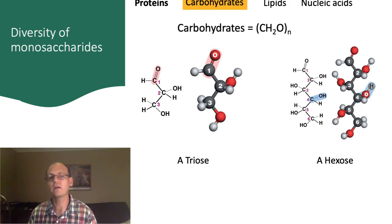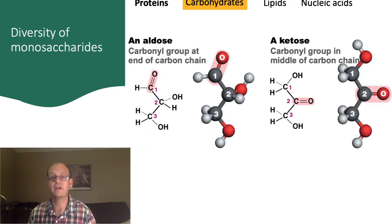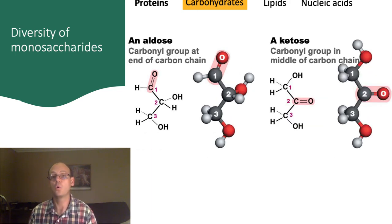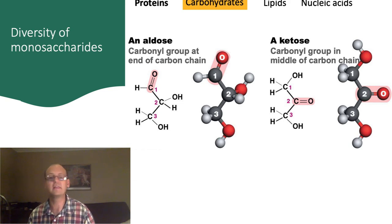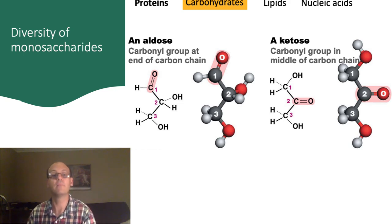Another way carbohydrates can vary is the position of the double-bonded oxygen atom, or the carbonyl group. In aldoses, the carbonyl group is at the end of the carbon chain, whereas in ketoses, the carbonyl group is in the middle of the carbon chain.